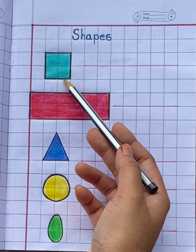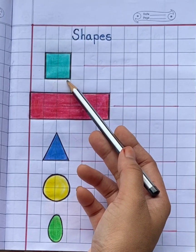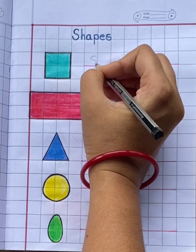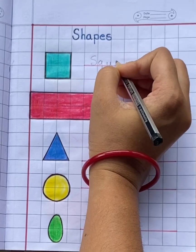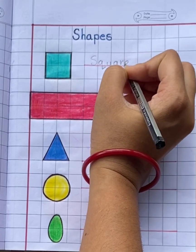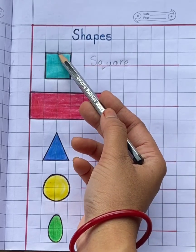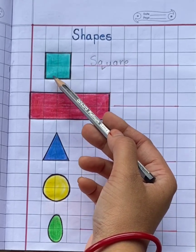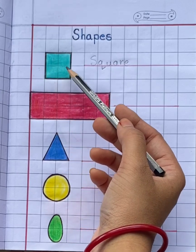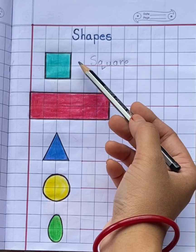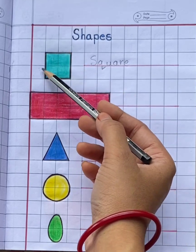First one is square. What is this? Square. S-Q-U-A-R-E. It has four sides: one, two, three, four. All the sides are equal. Square has how many sides, children? Four sides.